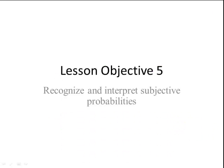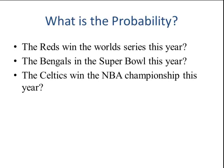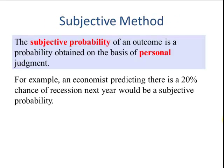Lesson objective number 5, subjective probabilities. This is used a lot in sports betting. What is the probability that the Reds are going to win the World Series this year? Or that the Bengals are going to win the Super Bowl? Or that the Celtics will win the NBA championship? These types of probabilities cannot use classical and we cannot use empirical. So we have to use subjective. Subjective probability of an outcome is a probability that is obtained from personal judgment. For example, an economist predicts that there is a 20% chance of a recession next year would be a subjective probability.